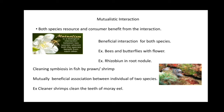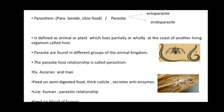Parasitism — 'para' means beside, 'sitos' means food/source. Parasites are of two types: ectoparasite and endoparasite. A parasite is defined as an animal or plant that lives partially or wholly at the cost of another living organism called the host. Example: Ascaris — Ascaris is a parasite and man's intestine is its host. Ascaris lives in the intestine of man.